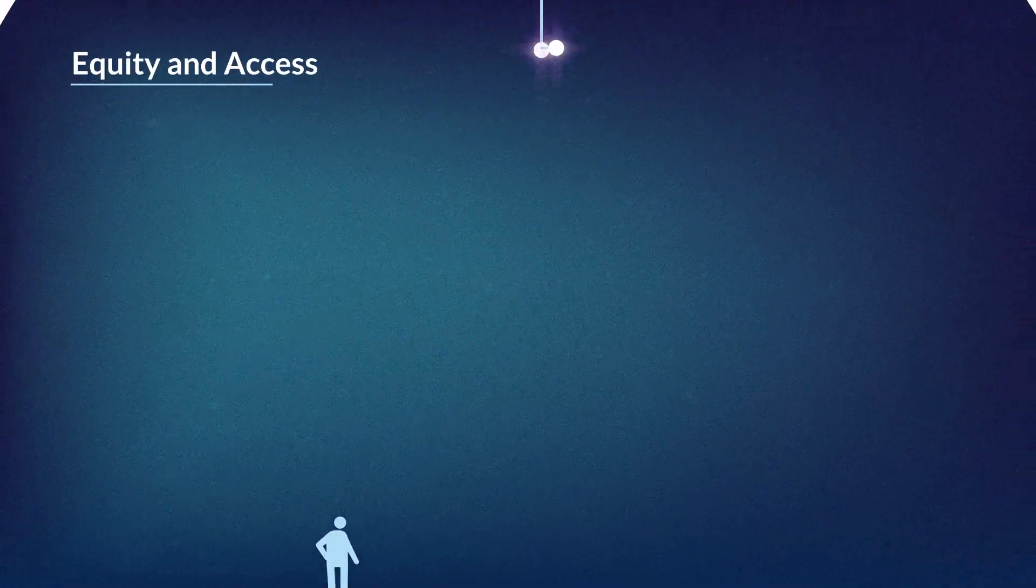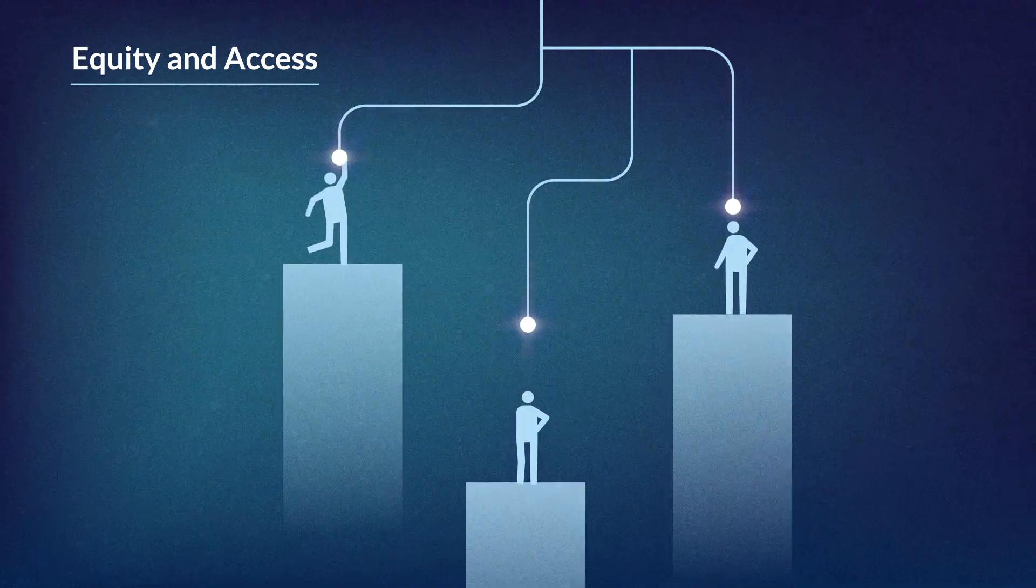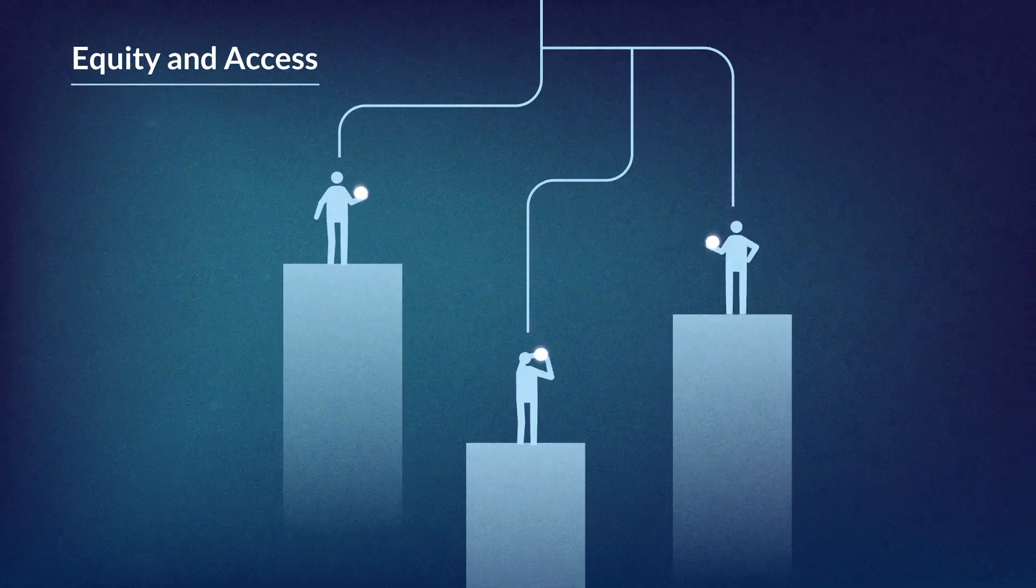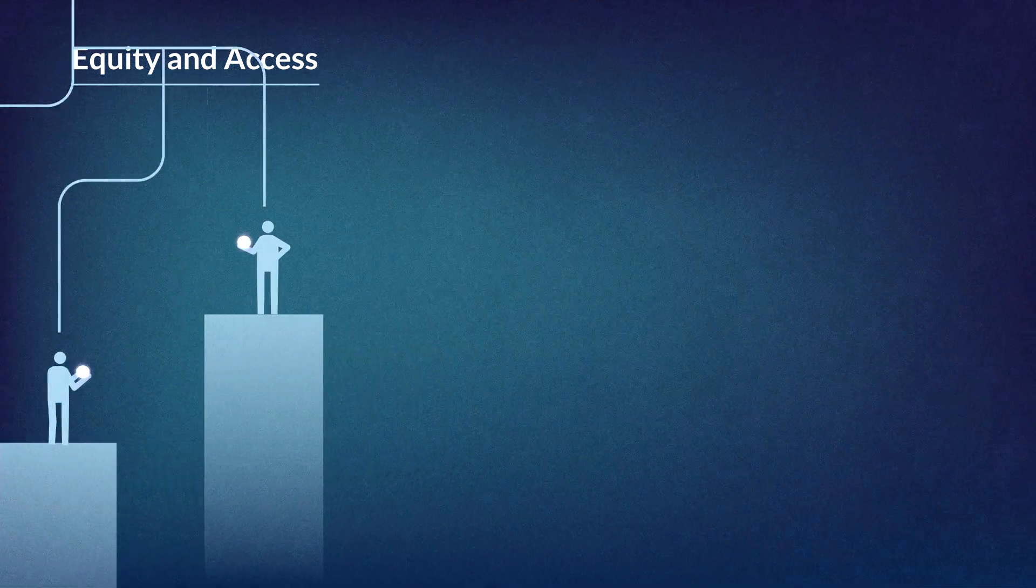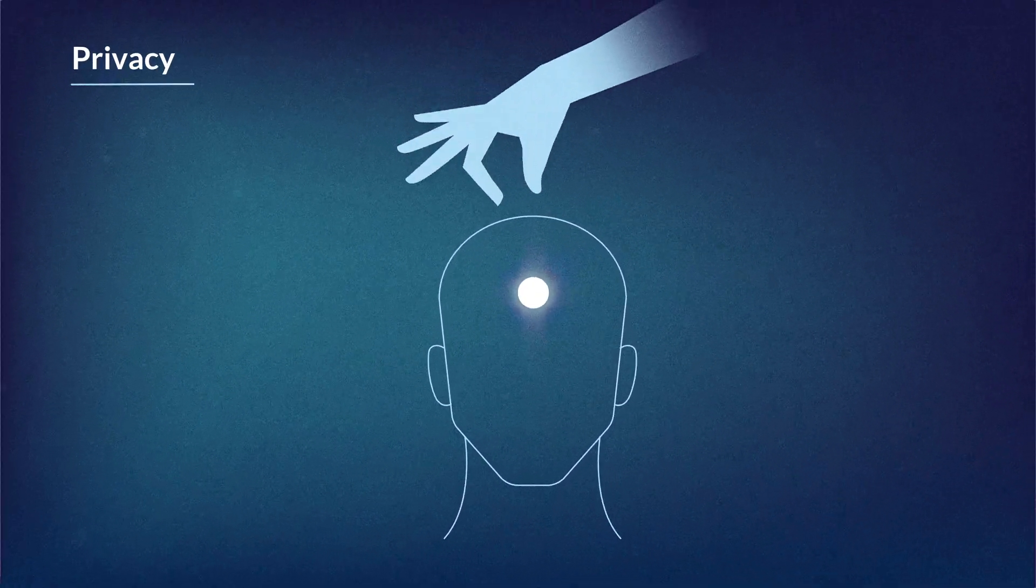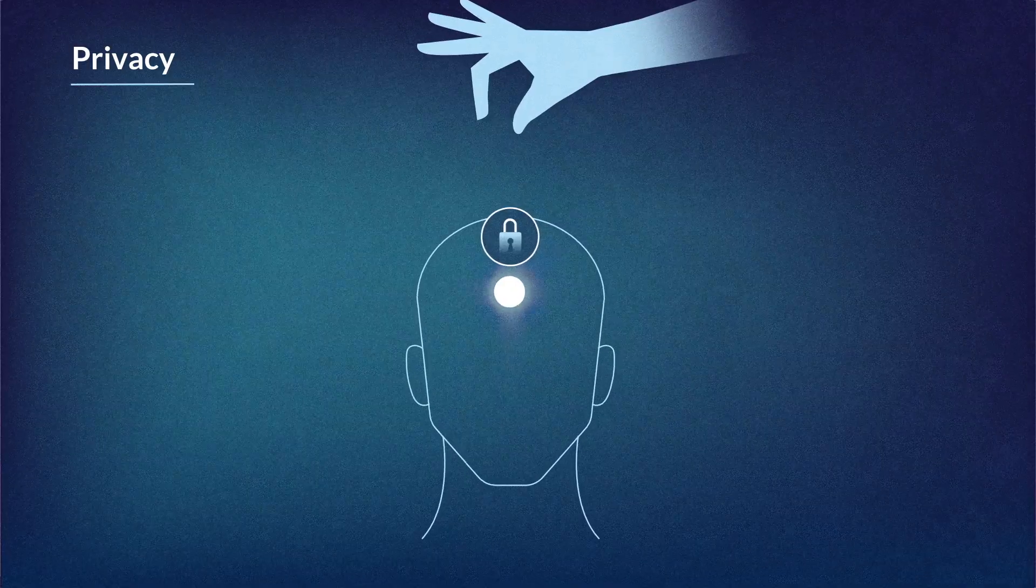Here are seven big ones. Equity and access: How do we promote equitable access to brain-based therapeutics and technology for everyone? Privacy: Who should have the right to our personal brain data and how should it be used?